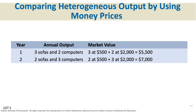Here's a simplistic example: if a country only made sofas and computers — in year one they made three sofas at $500 each and two computers at $2,000 each — their GDP would be $5,500. In year two they sold two sofas and three computers at the same prices, so there's no inflation. Their GDP that year is $7,000. Our economy is much more complex, so it's harder for the Bureau of Economic Analysis to compile this data.